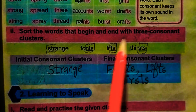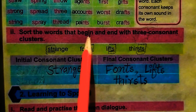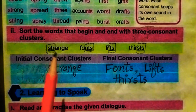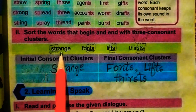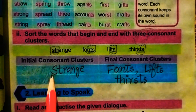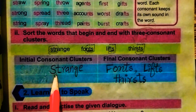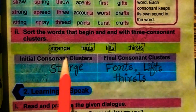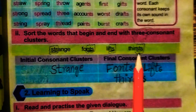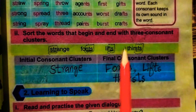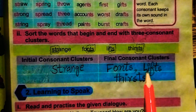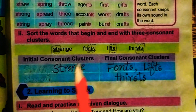We have to find words that start and end with three consonant clusters. So: 'strange' has an initial consonant cluster at the start. Then fronts, lifts, and thrusts have final consonant clusters. We need to write them in the relevant column.